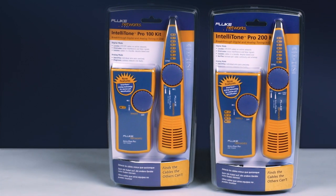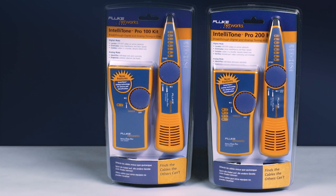Find cables the others can't. Get the IntelliTone Pro from Fluke Networks. There are two different models to choose from. The IntelliTone Pro 100, designed for single-line telco applications, and the 200, used for two-line applications and includes a jack on the probe for wire mapping.